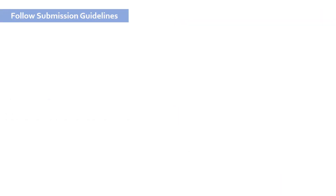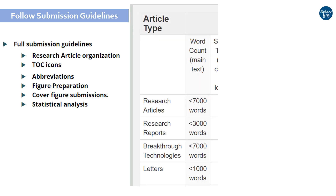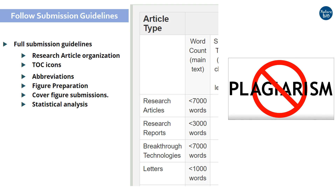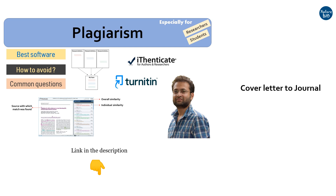Always follow the submission guidelines. See if there is any length constraint on the manuscript. Be mindful of plagiarism as this would straightforwardly invite rejection. You can watch my video on the best software to check plagiarism and how to avoid it. Format the references according to the guidelines of the journal. Write a strong cover letter to compel the editor to get it reviewed. If you want to learn more about how to write a cover letter to the editor for a research article publication, do mention it in the comments below.